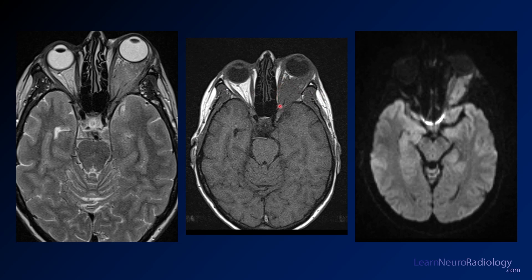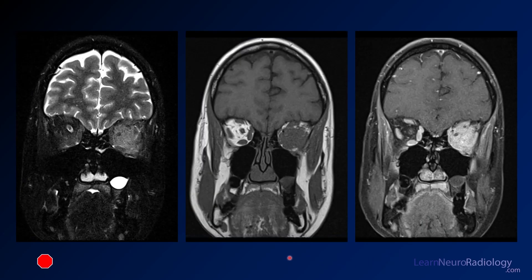On T1, there's loss of the normal orbital fat and loss of the planes of the extraocular muscles — for instance, you lose the medial rectus. On diffusion, there's intermediate diffusion signal within the orbit, which is abnormal since you really shouldn't be seeing anything there at all.